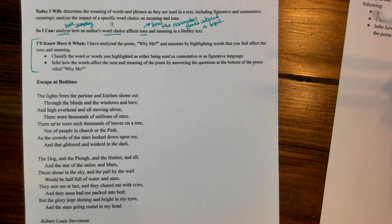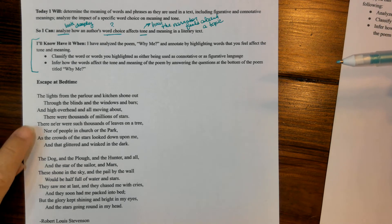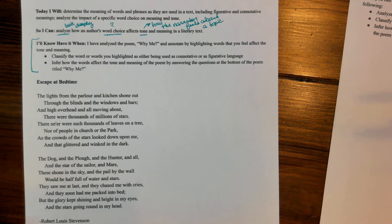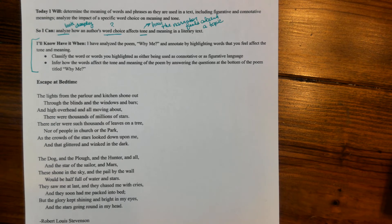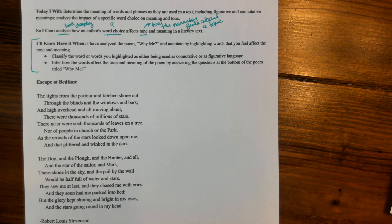The lights from the parlor and the kitchen shone out through the blinds and the windows and bars, and high overhead, all moving about, there were thousands of millions of stars. There were neither such thousands of leaves on a tree, nor of people in church or the park, as the crowds of the stars looked down upon me and that glittered and winked in the dark. The dog and the plow and the hunter and all, and the stars of the sailor and Mars — these shone in the sky and the pail by the wall would be half full of water and stars. They saw me at last and they chased me with their cries and they soon had me packed into bed. But the glory kept shining and bright in my eyes and the stars going round in my head. This is by Robert Louis Stevenson.